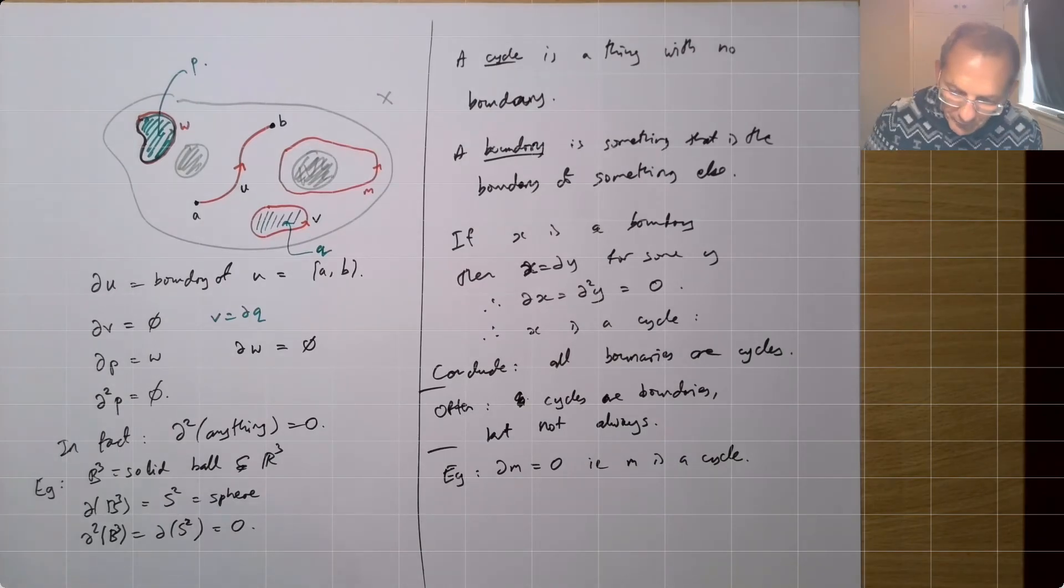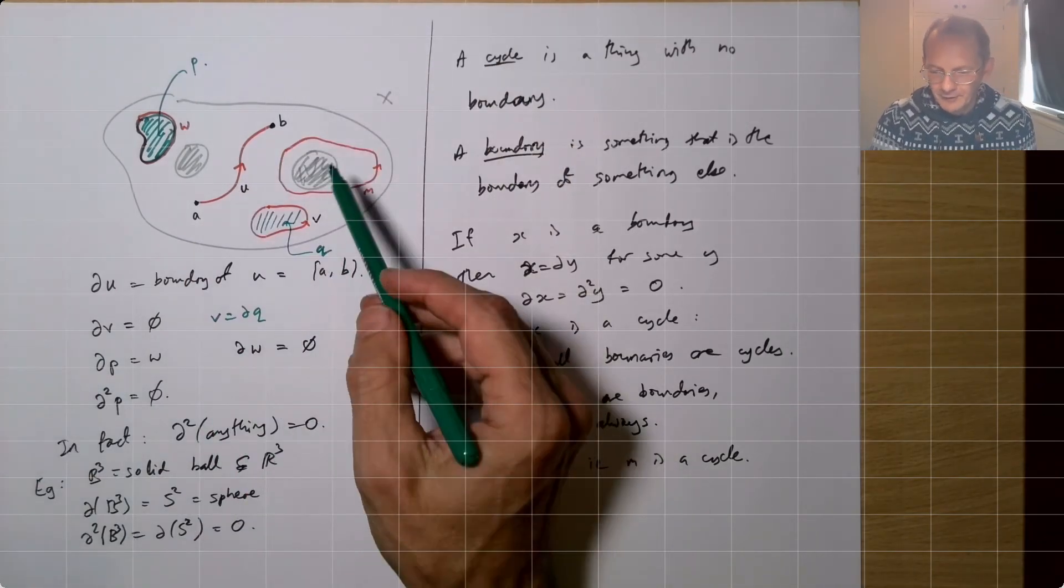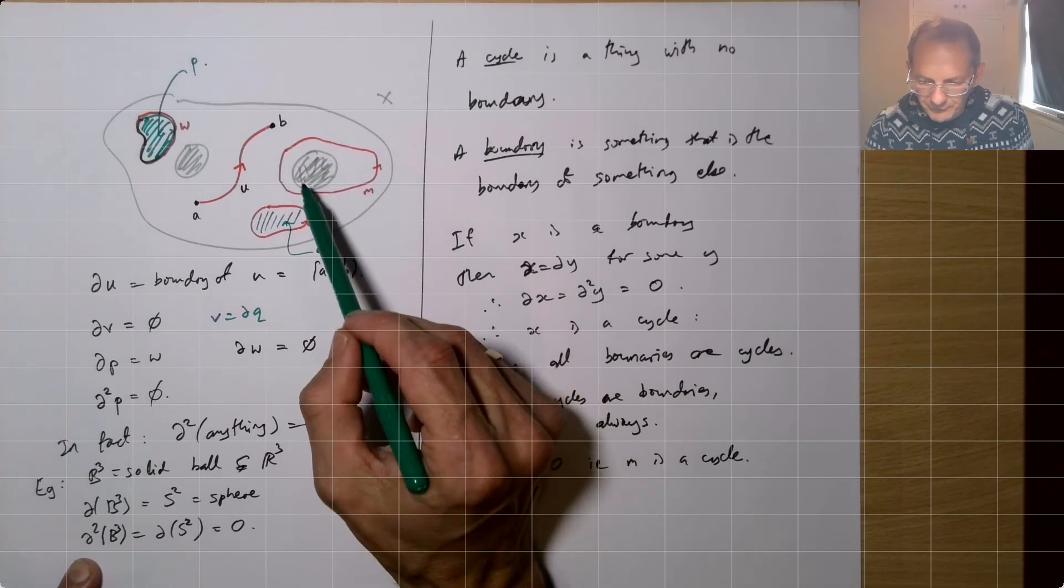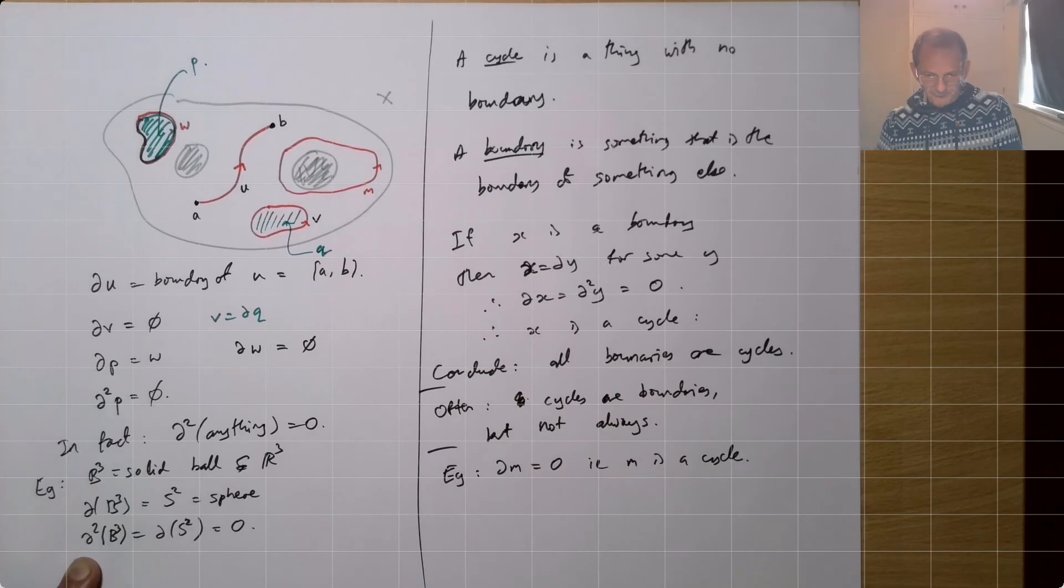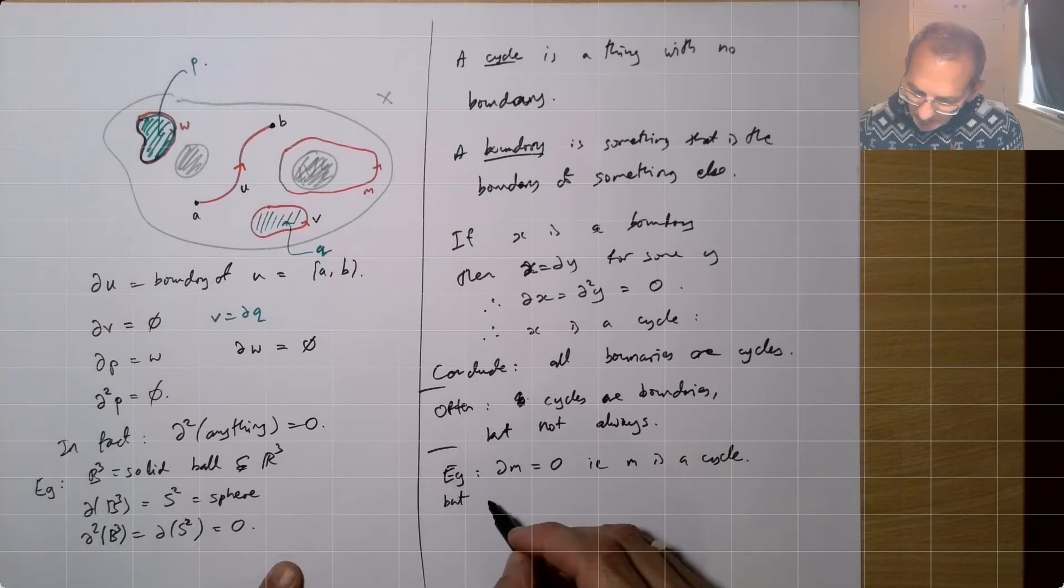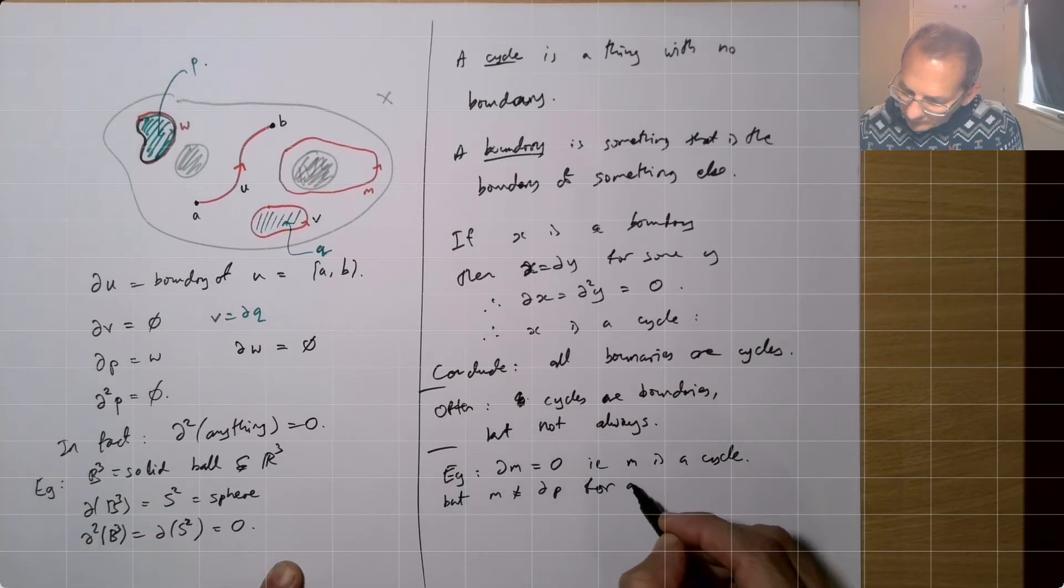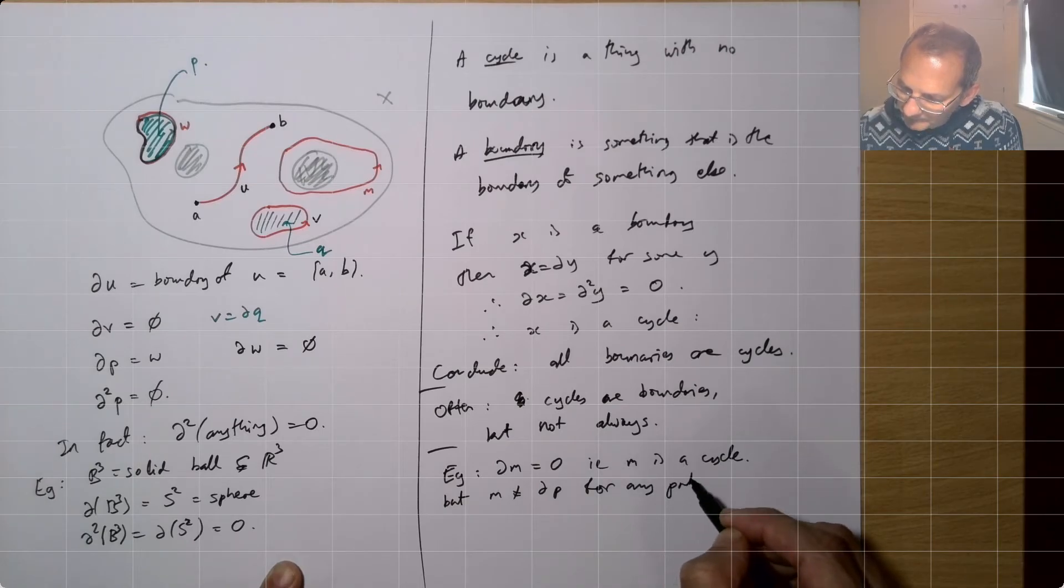But if we don't allow ourselves to use the whole plane, if we only allow ourselves to use X, we can't fill in M because to fill in M, we need to use some of this gray space here, which is not part of the space X. It's part of the hole. M is not dP for any part P of X.